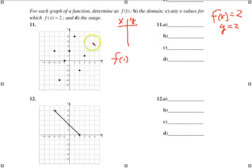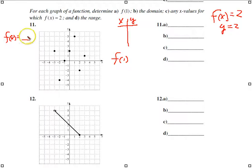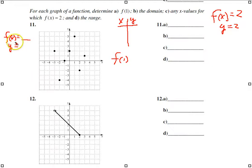In example 11, they're introducing what is called function notation, where we say 'the function of x' equals something, and this gives us the Y value. The symbol f(x) can be substituted with the letter Y — Y equals something. I'm going to suggest we use a t-chart to help figure out what this is all about.